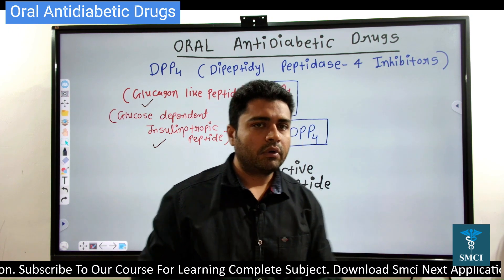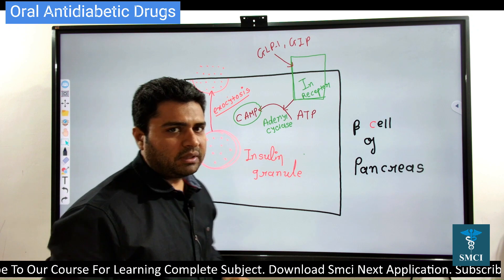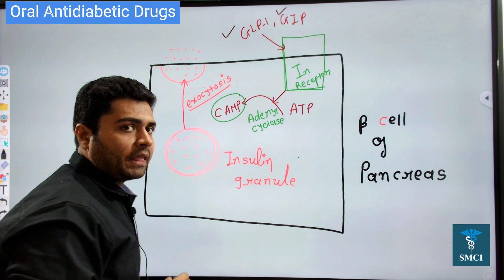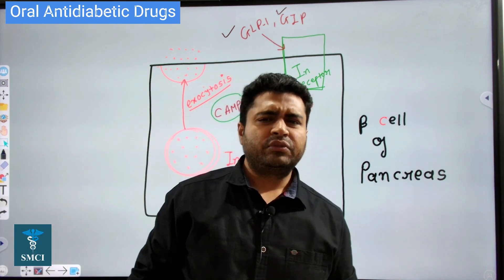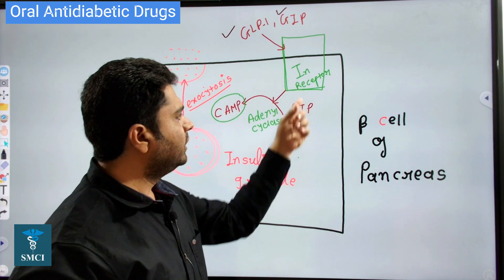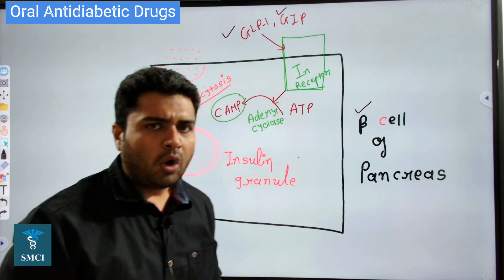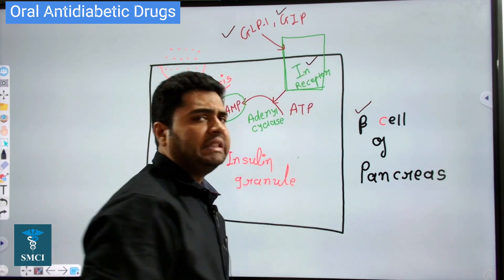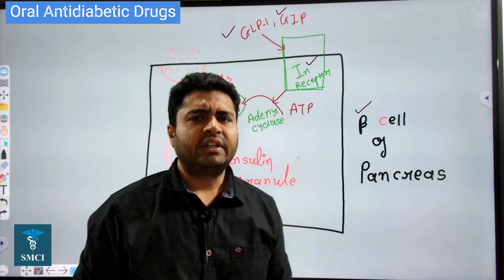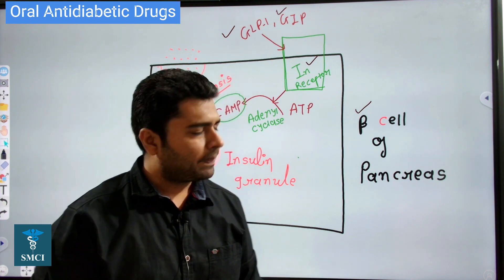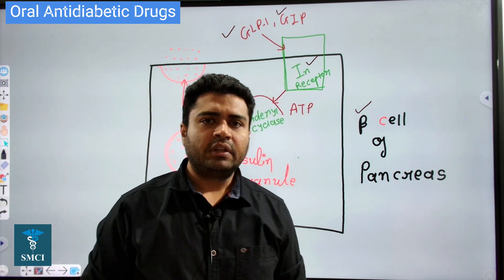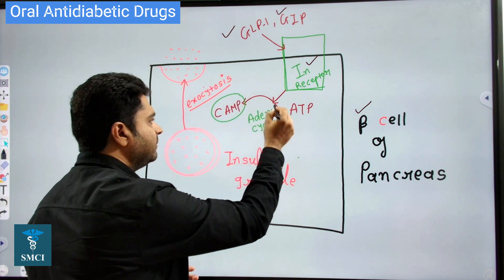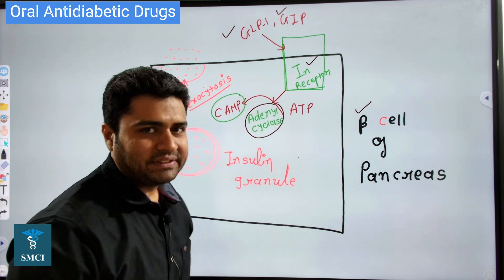When GLP-1 and GIP are present in the blood, they travel and reach the beta cells of the pancreas. On the beta cells, there is a receptor called the incretin receptor. This incretin receptor is a type of G-protein coupled receptor, and GLP and GIP bind with this receptor.